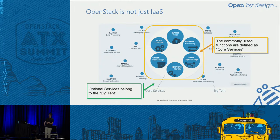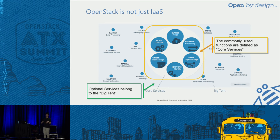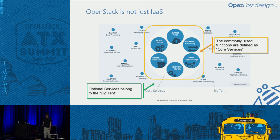So I talked about the good things about OpenStack. Now I'm going to talk about what we should consider. When I say OpenStack provides abstraction to compute, network, and storage, I'm only talking about the core of OpenStack. OpenStack is not just IaaS — I brought the big tent picture. A lot of people know this if they have touched OpenStack.